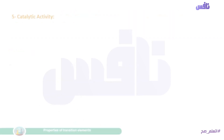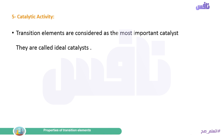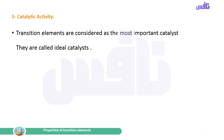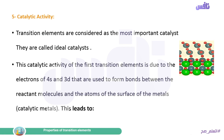The fifth property is catalytic activity. Transition elements are considered the most important catalysts — they are called ideal catalysts. A catalyst is a substance which changes the speed of a chemical reaction without being consumed in it. The catalytic activity of the first transition elements is due to the electrons of 4s and 3d.